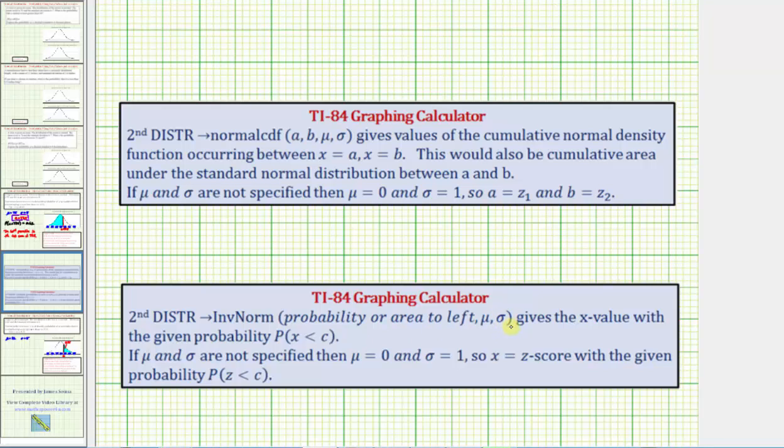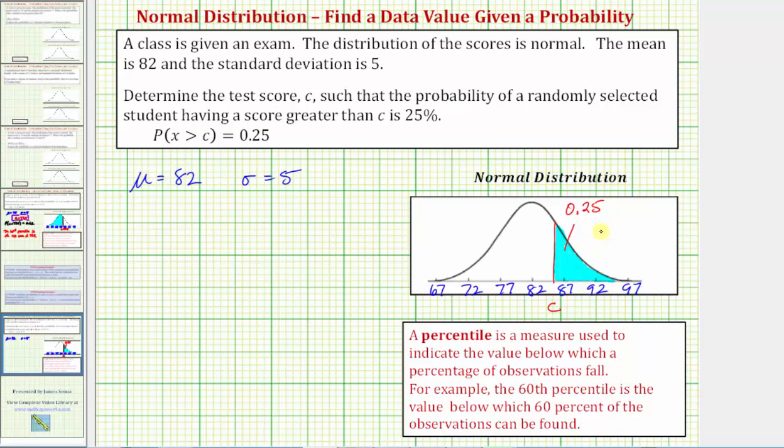So it's important to recognize that when we use the inverse norm feature, we must have the probability to the left, not to the right. In our case, though, notice how we have the probability to the right is 0.25, but to find this value of c on the 84, we need to find the probability to the left.